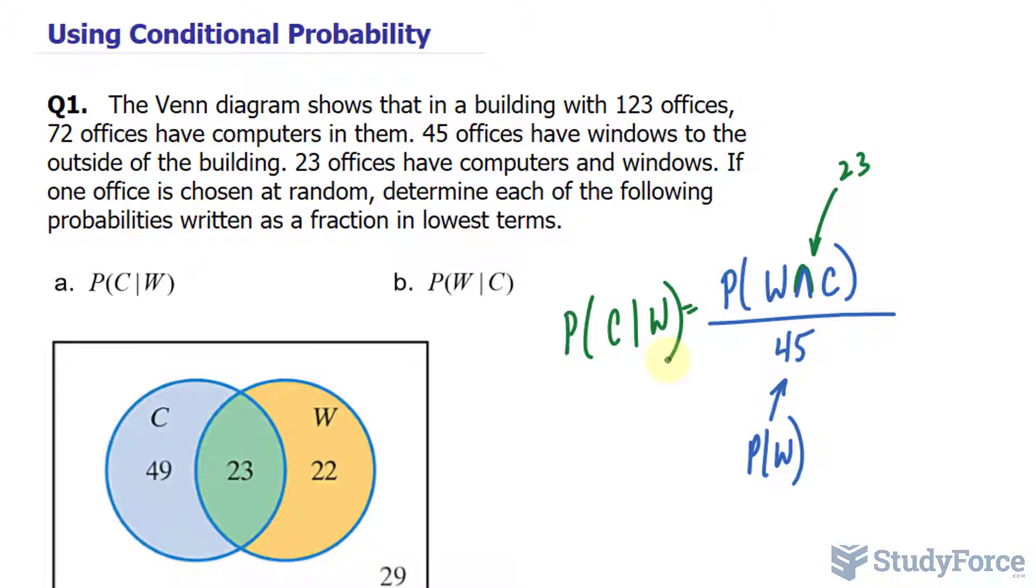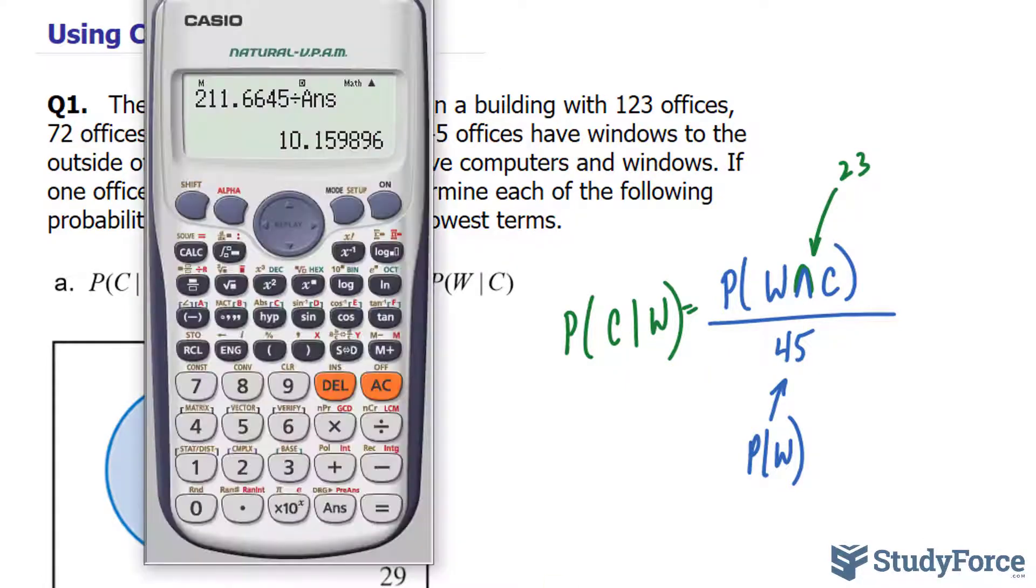You take that decimal and multiply it by 100 to get the percentage. 23 over 45 times 100 is approximately 51.1%.